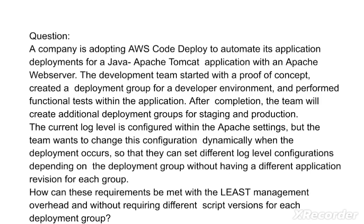The current log level is configured within the Apache settings, but the team wants to change this configuration dynamically when the deployment occurs, so that they can set different log level configurations depending on the deployment group without having a different application revision for each group. The question is: how can these requirements be met with the least management overhead and without requiring different script versions for each deployment group?